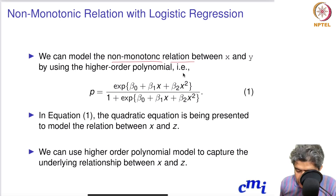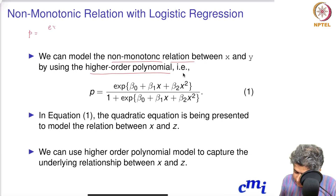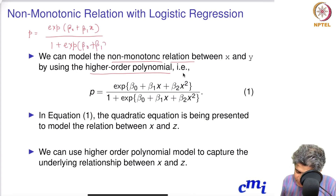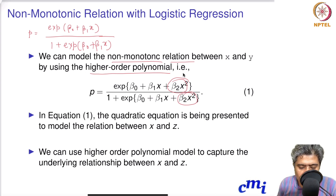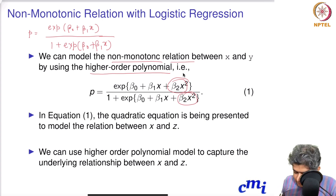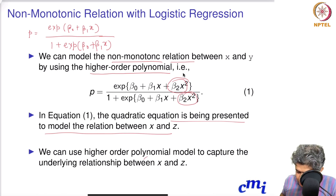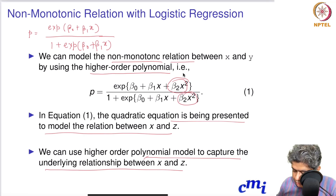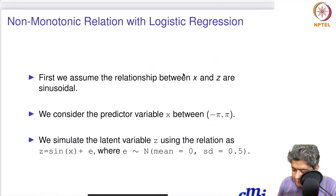If you use simple logistic regression it will only model the monotonic relationship between x and y. We can model non-monotonic relationships by using higher-order polynomials. Instead of stopping at beta_0 plus beta_1*x in the exponent, we add quadratic, cubic, or higher-order terms. A quadratic equation is presented to model the relationship between x and z, and we can use higher-order polynomial models to capture the underlying non-monotonic relationship.